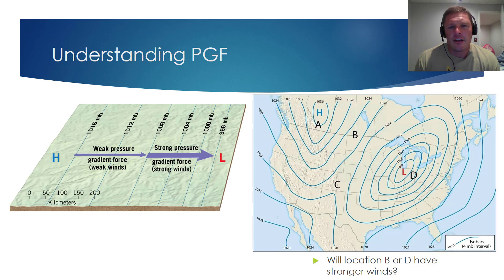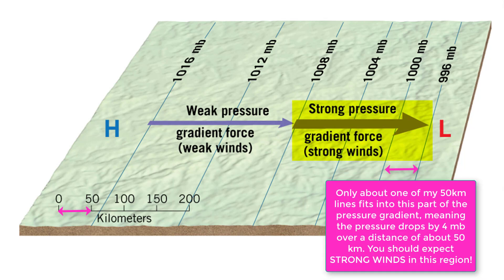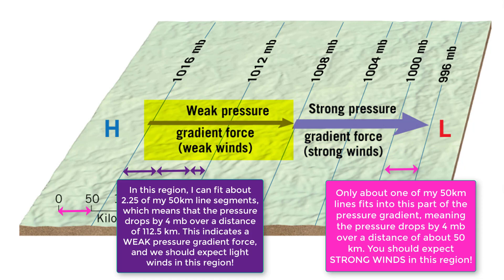Let's take a quantitative look at the pressure gradient. In the image on the left, a 50-kilometer line segment placed in a strong pressure gradient region shows a pressure drop from 1000 millibars to 996 millibars over a relatively short distance — indicating strong winds. When that same line segment is placed in a weak pressure gradient region, multiple segments fit, meaning the four-millibar drop occurs over a much greater distance. So closely spaced isobars mean a strong pressure gradient force and strong winds; widely spaced isobars mean a weak pressure gradient force and weak winds.